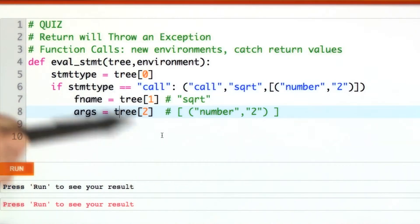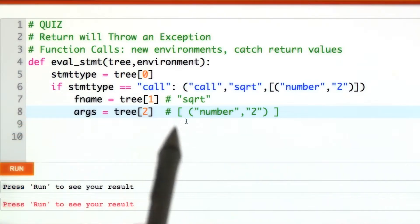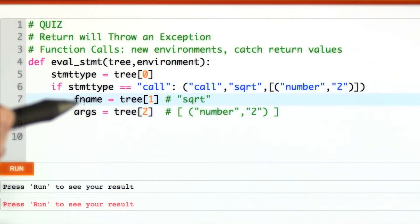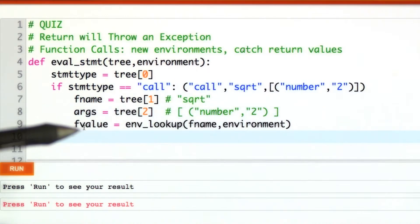And because a function may have one, two, three, or more arguments, we just have a list of expressions. Function name may mean different things in different contexts, just like any other variable. So we'll go look it up in the current environment.